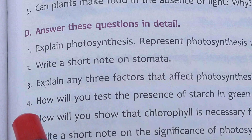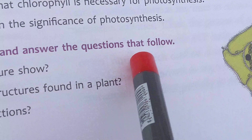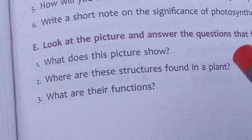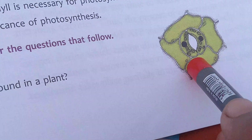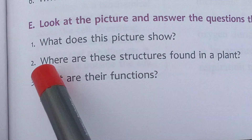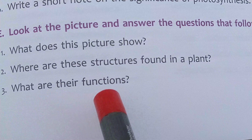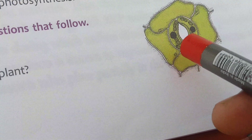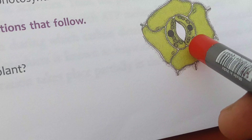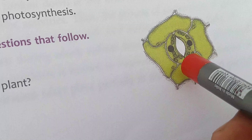Next, look at the picture and answer the questions that follow. What is shown in the picture? This picture shows the opening of stomata, because these two bean-shaped guard cells become swollen and the stomata are open. Where is this structure found in the plant? In the guard cells. What are their functions? After getting too much water, guard cells become swollen and bulge outward, causing the stomata to open. From the lower surface of leaves, the transpiration process is ongoing.